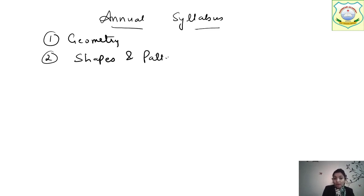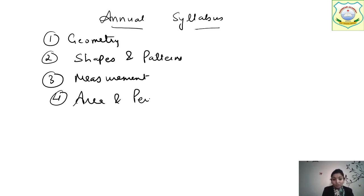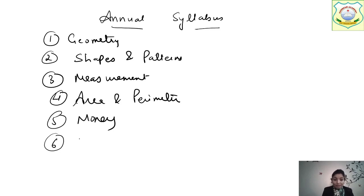As you have already received this syllabus, I am repeating it once again. The third chapter is Measurement. Fourth is Area and Perimeter. Fifth is the Money chapter. And at last, sixth is Data Handling. These 6 chapters are going to come in your annual exam.